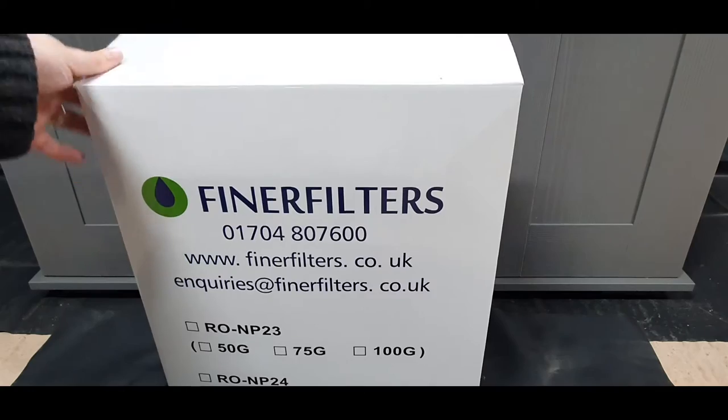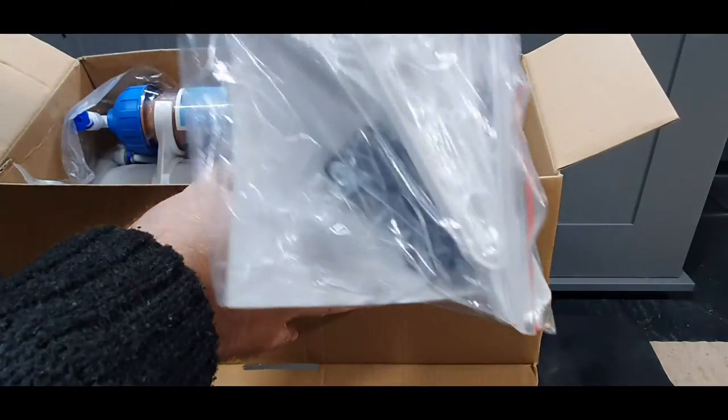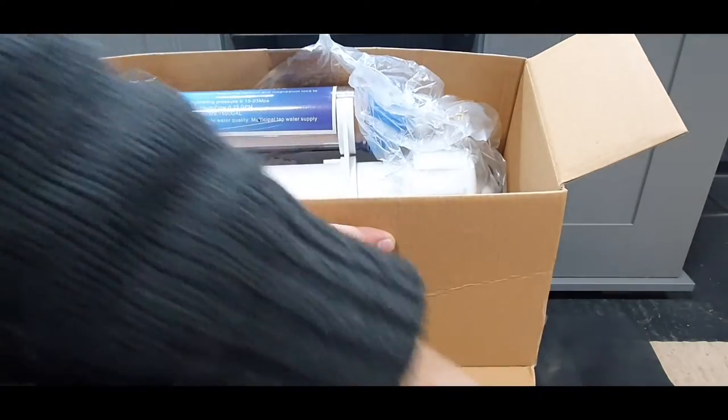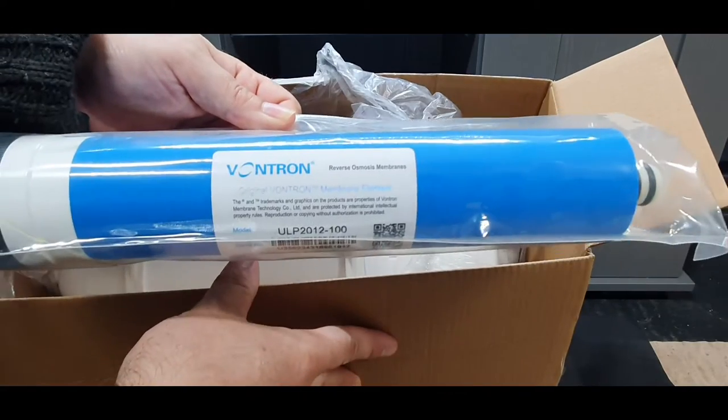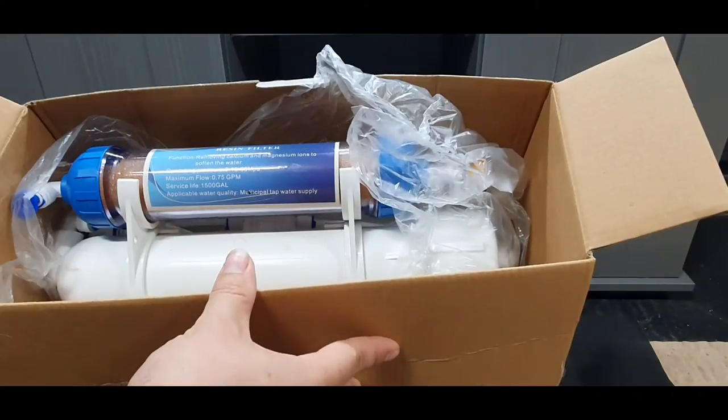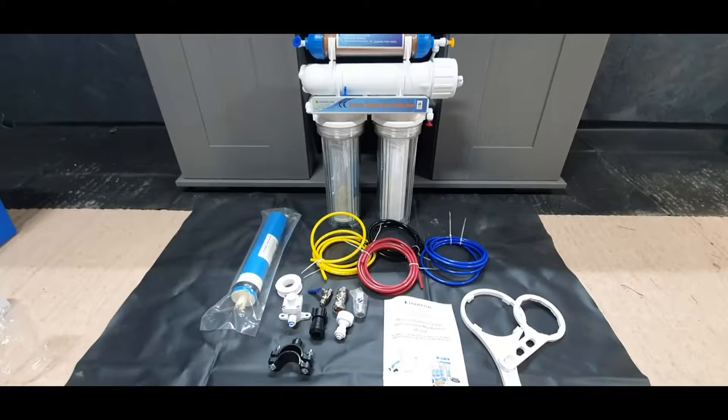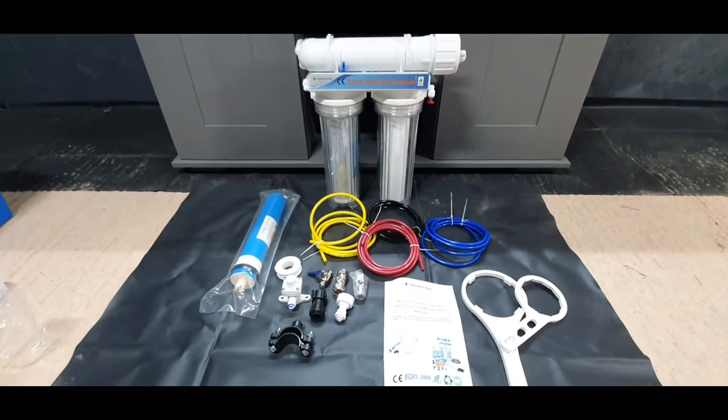Let's have a look inside and see what we get. We have fixtures and fittings which we'll go through in a moment. The actual unit itself is here, we've got our RO membrane there separately packed, and then inside we have the unit.